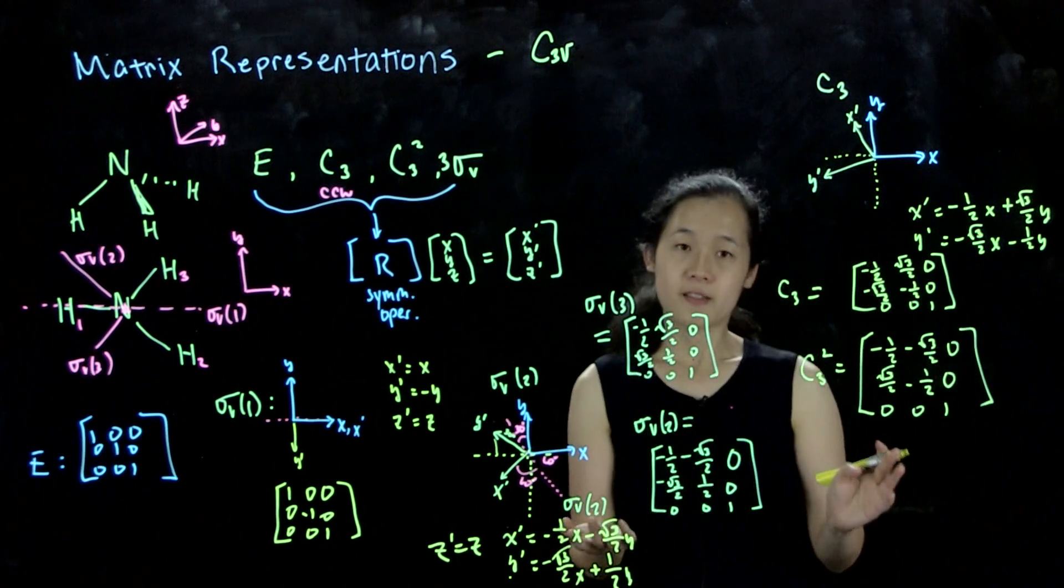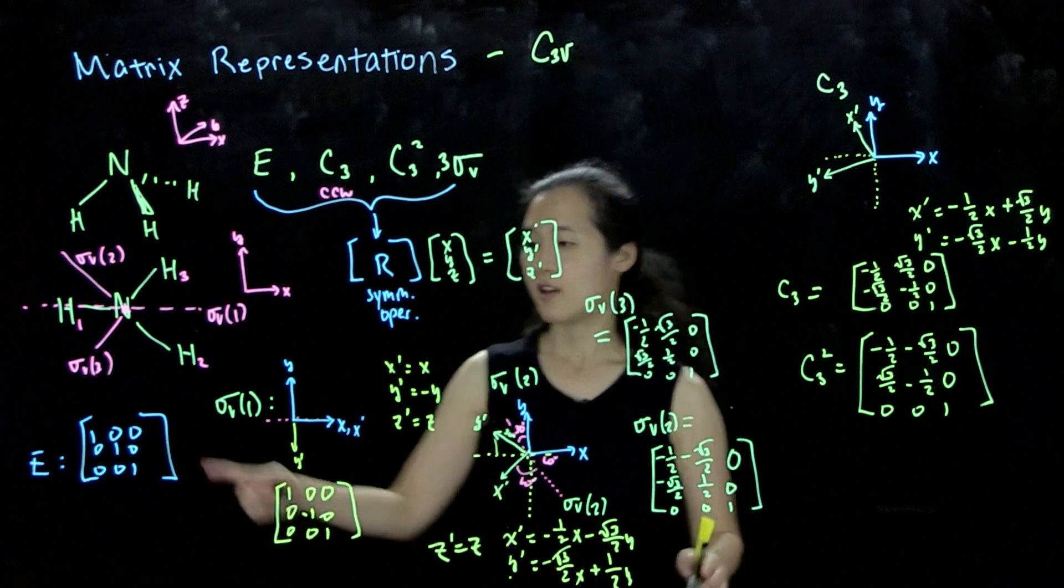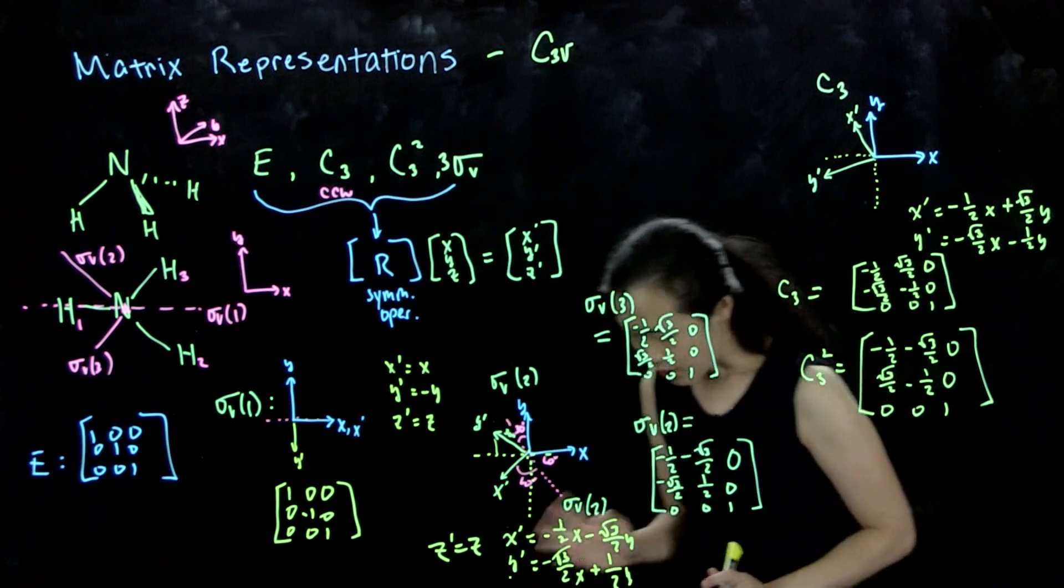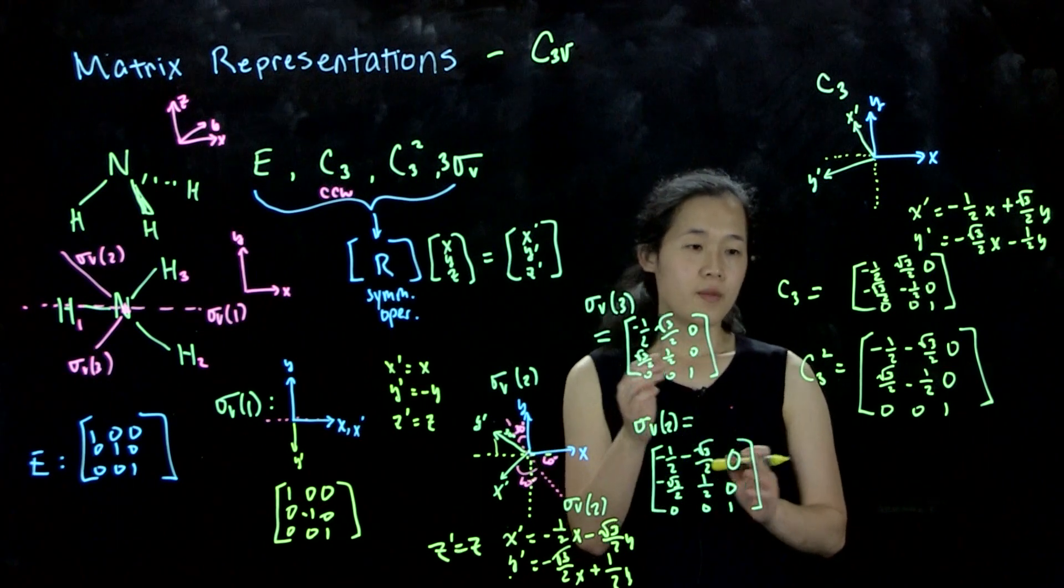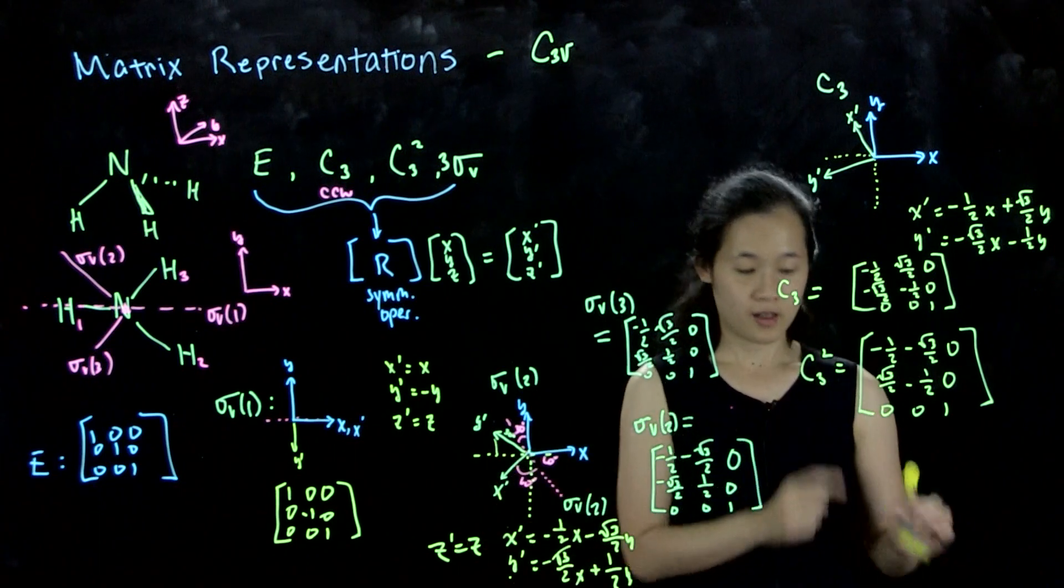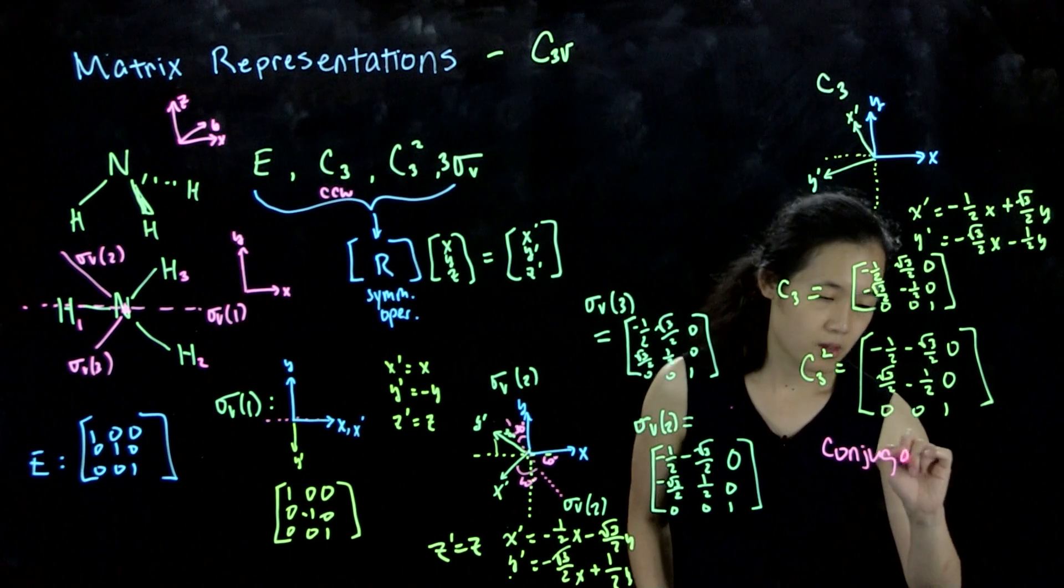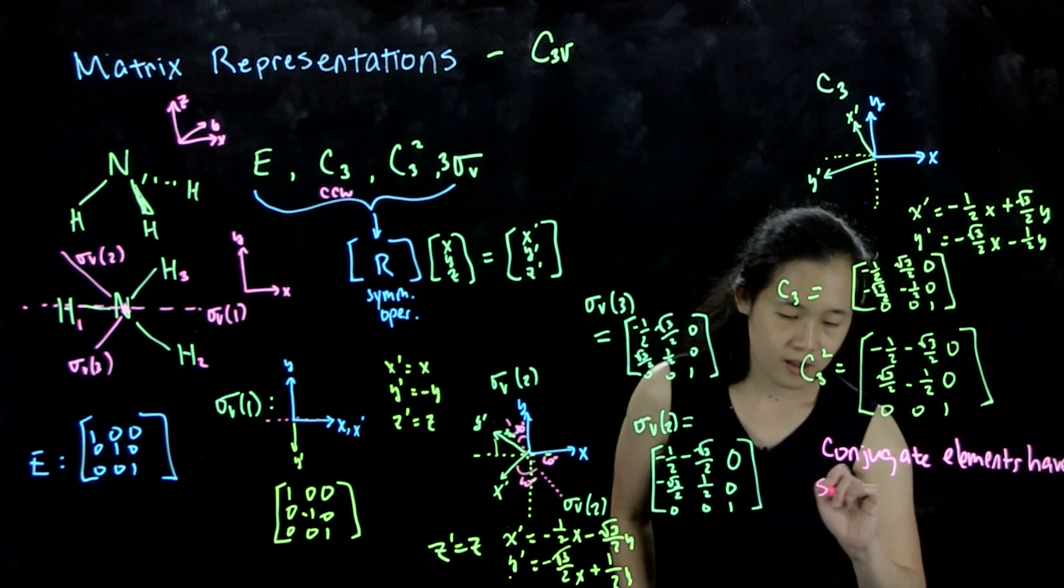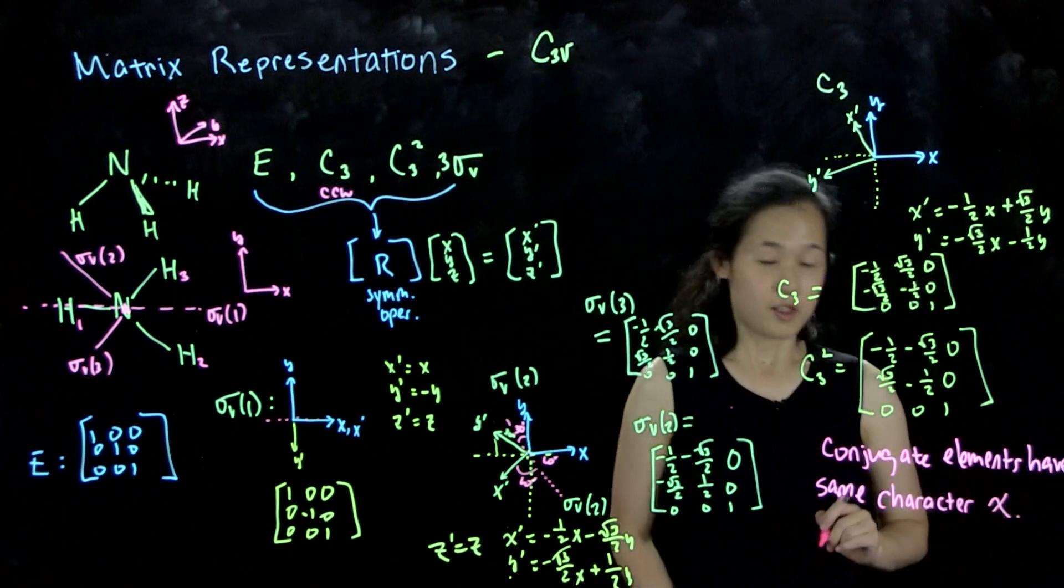So this is our matrices for all our six different symmetry operations. Our two C3s, our three sigma v's, one, two, three, and then our E matrix. This is not the most convenient way to represent all your symmetry operations. So one thing I want to point out is, from last class we were able to combine subsets of our symmetry operations into classes by elements that are conjugate to each other. And the reason this is important is because conjugate elements have the same character chi. So what is a character? The character is the sum of the diagonals here.